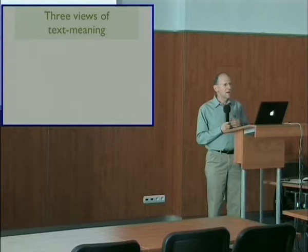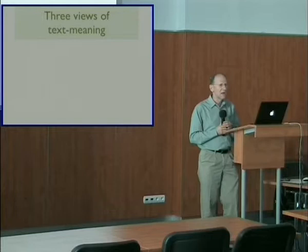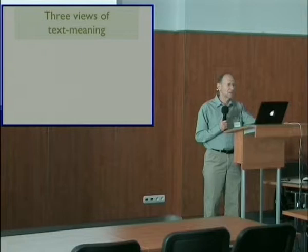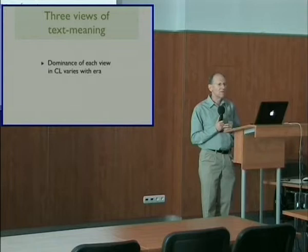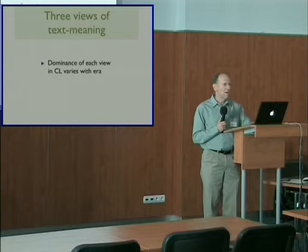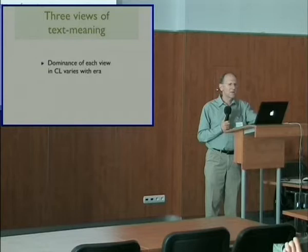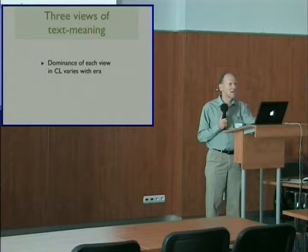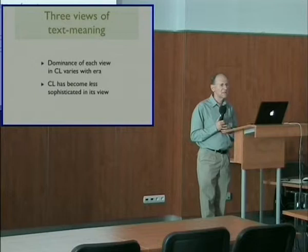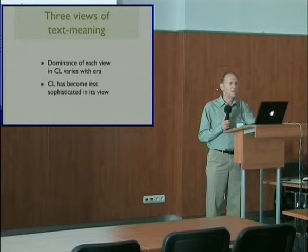As I said earlier, computational linguists are not philosophers or literary theorists, and they don't think very much — if at all — about these issues. Nonetheless, a view of text-meaning is implicit in much of what we do in computational linguistics. And in fact, when we look at this, we find that there have been three eras in computational linguistics, and each era implicitly corresponds to one of the three different views of the locus of text-meaning. In each of the three eras, a different but implicit view of text-meaning was dominant. Surprisingly, the view of text-meaning that computational linguistics has has grown less sophisticated over time — and that's what I'll now explain.